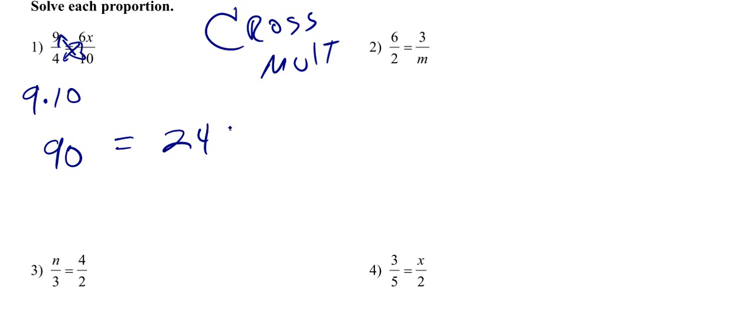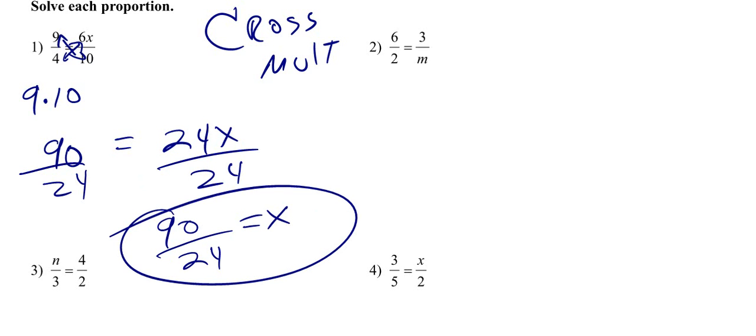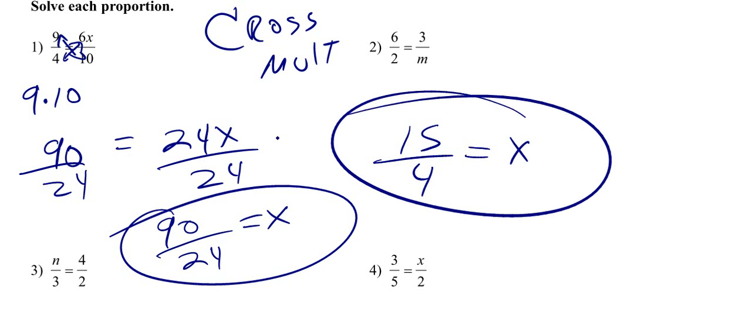Now using our inverse operations, we're able to get 90 over 24. That's equal to x. If you're in my class, I'll take that answer. But 90 over 24, that reduces down to 15 over 4, and this is the form that most teachers like.